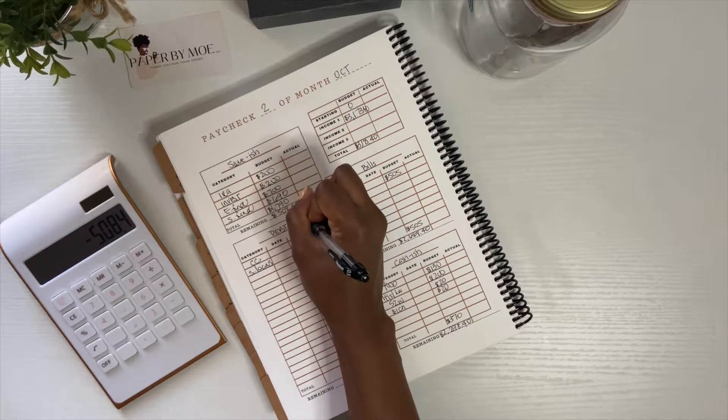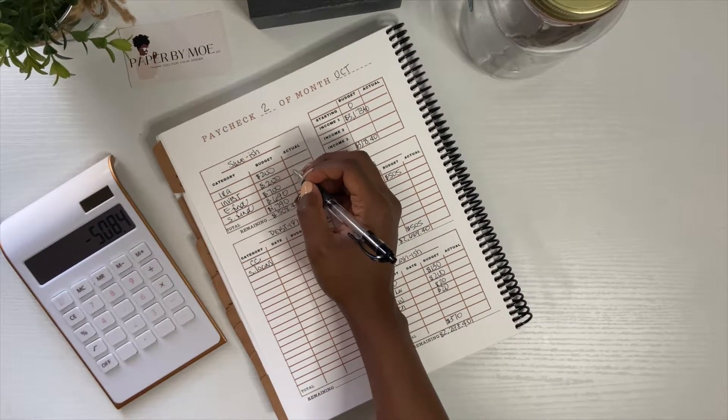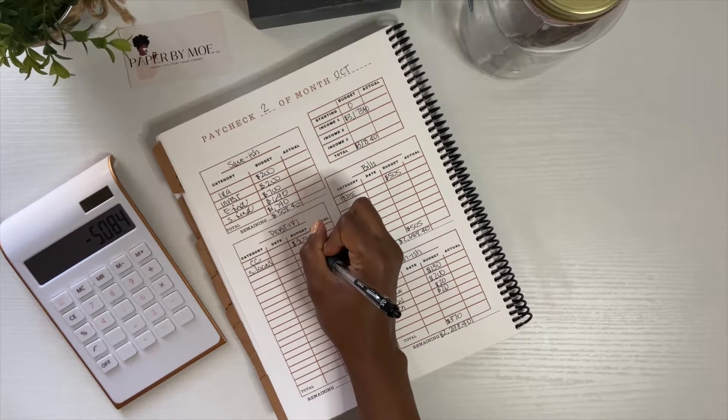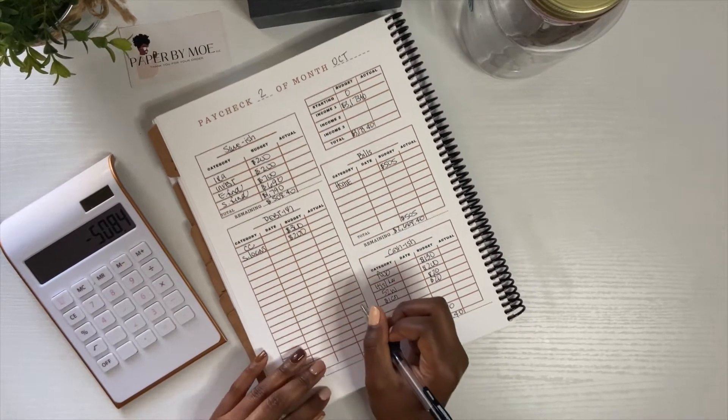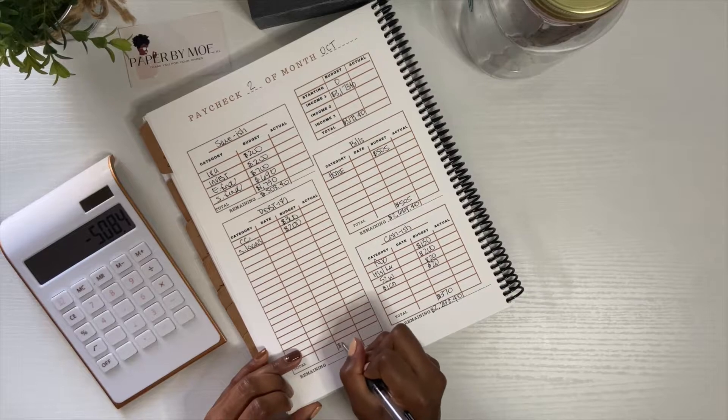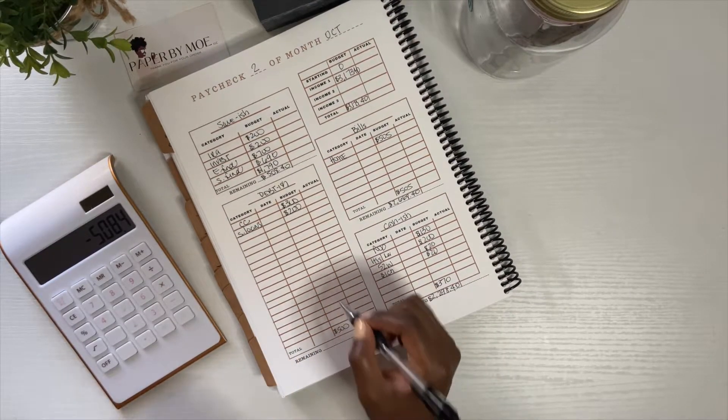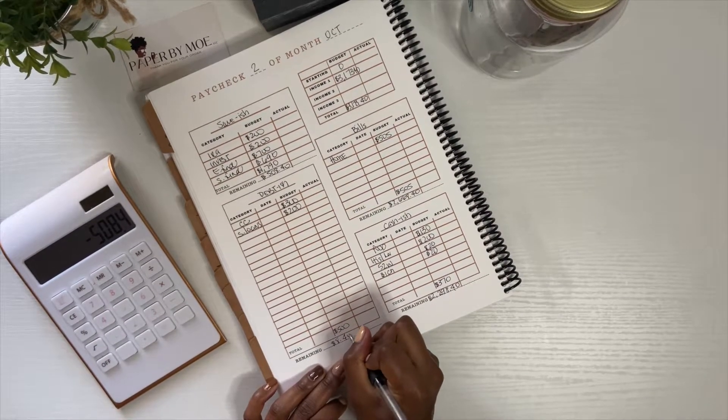I'm going to give my credit card $300 and I'm gonna give my student loans $200. That's gonna leave me $500 with a total there and that means my leftover cash is gonna be $8.40.